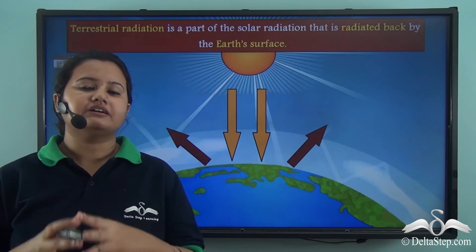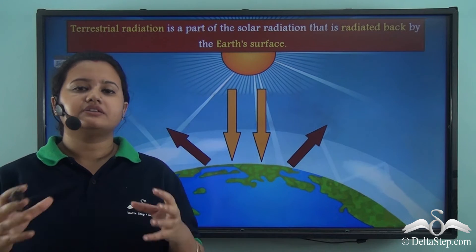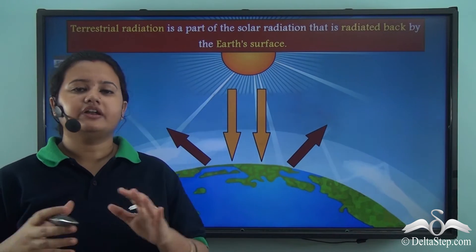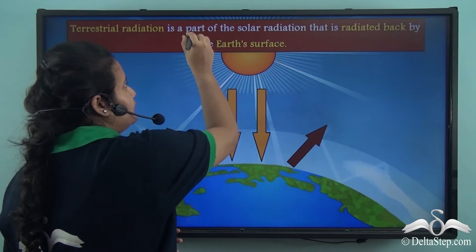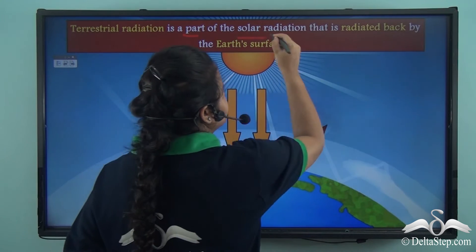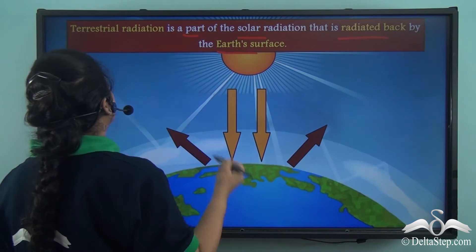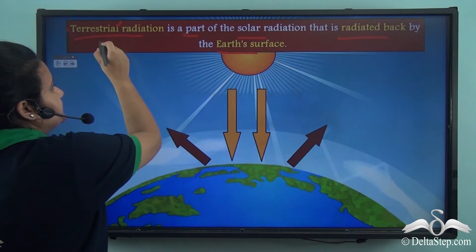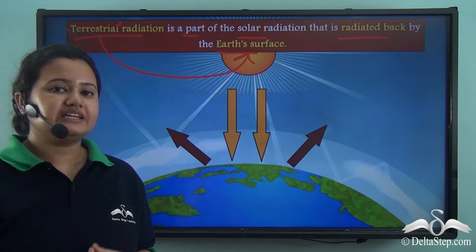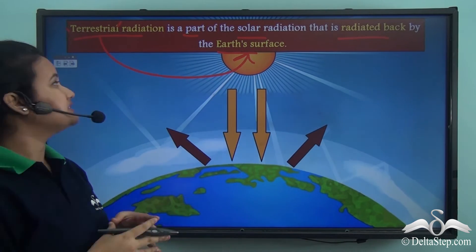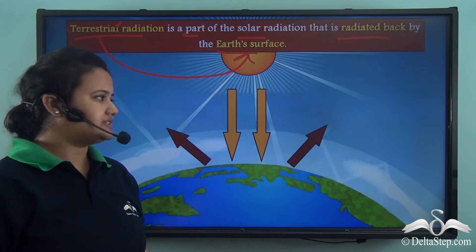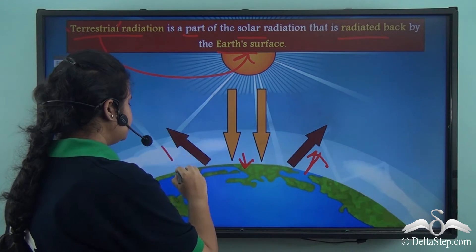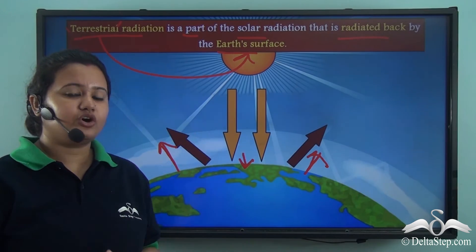The Earth's surface does not keep all the solar radiation to itself. Rather, it radiates back some of the solar radiation. The amount or portion of solar radiation that is radiated back by the Earth's surface is called terrestrial radiation. Here the word 'terrestrial' is related to the Earth's surface. In this picture we can see sun's heat coming to the Earth's surface and a portion of it being radiated back to space — this is terrestrial radiation.